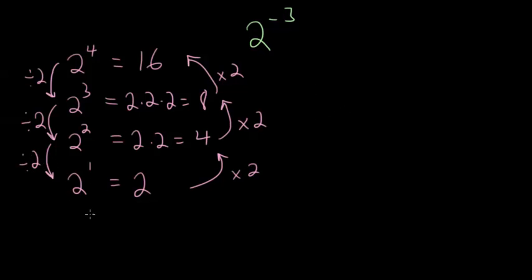And basically, we can keep going. We can ask ourselves, what does it mean to raise something to the 0 power? So we're going to continue the pattern. We're just going to divide by 2 again. And essentially, we were starting at a value of 2 for 2 to the first. And then to get to 2 to the 0, we divide this by 2.